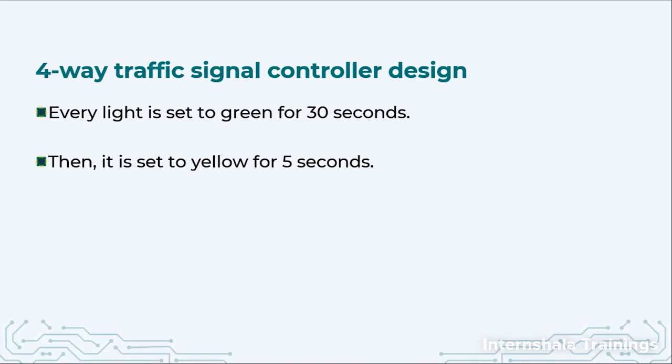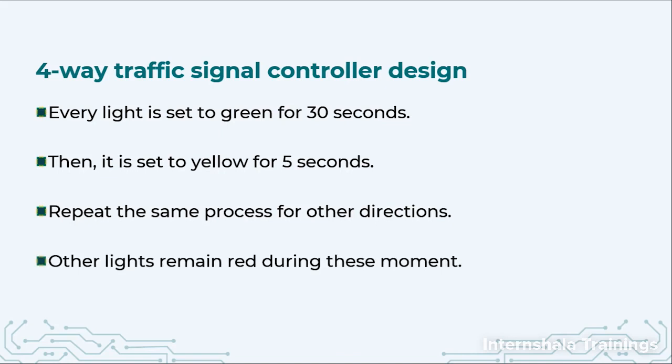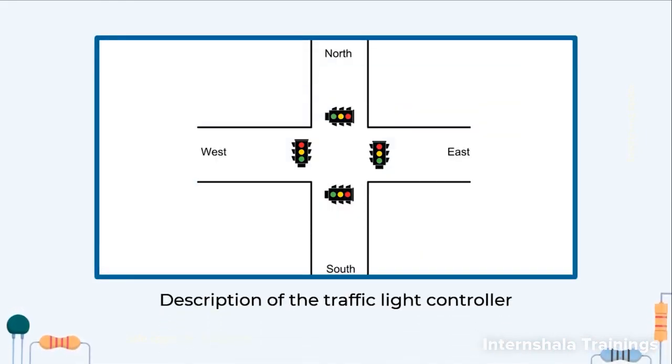We then set the same direction to yellow for a brief interval, like 5 to 10 seconds — normally 5 seconds. Then we repeat the process for the next direction, and the next, and so on, coming back to the first. Whenever one traffic light is green or yellow, the other three directions will have the red color. This is our working algorithm.